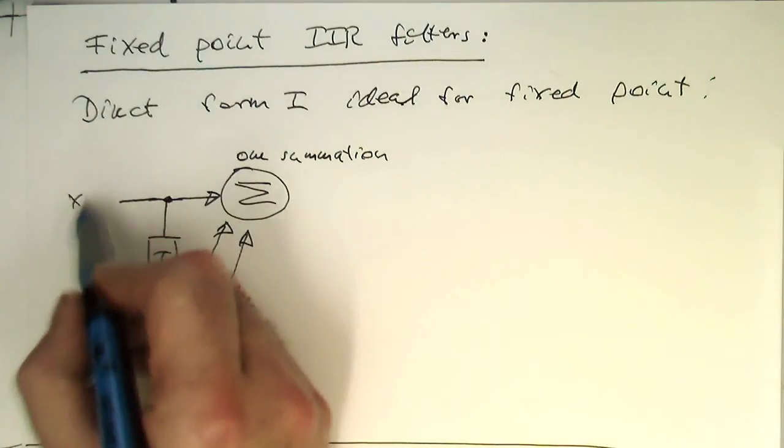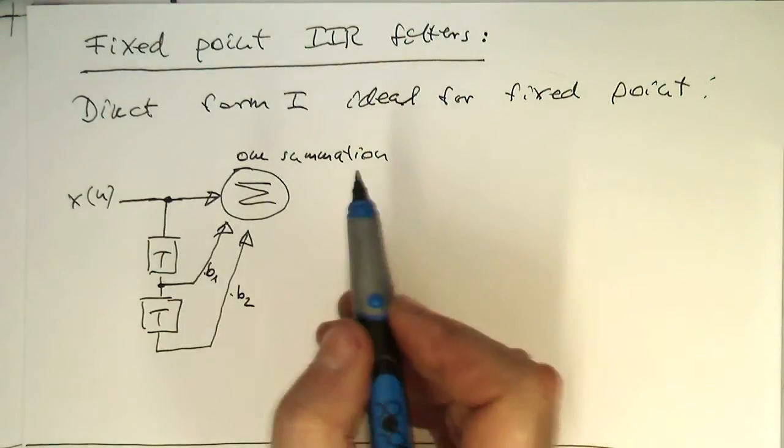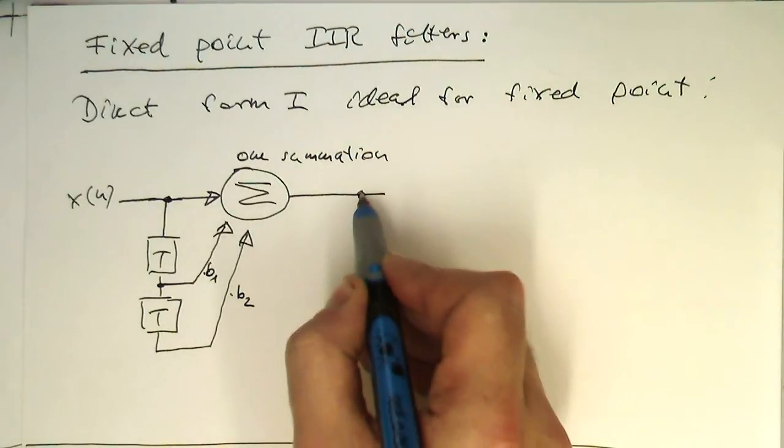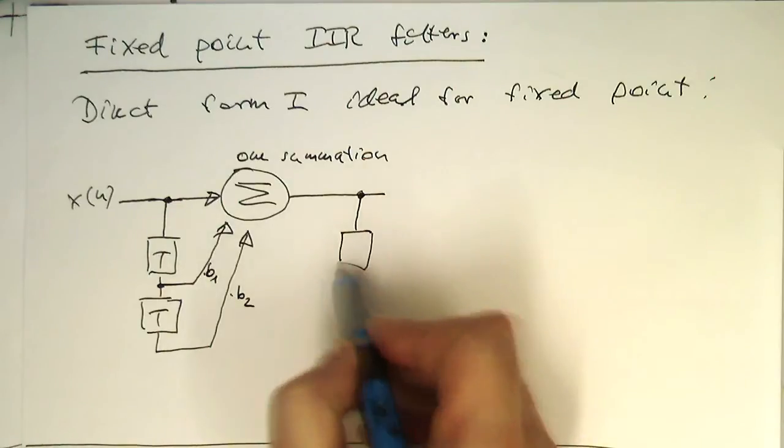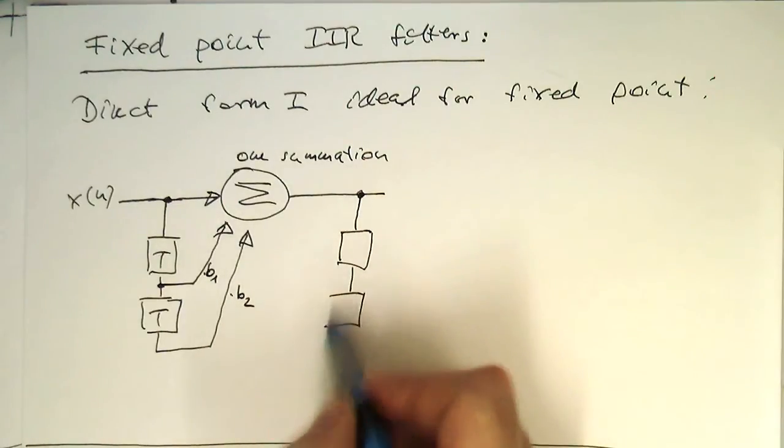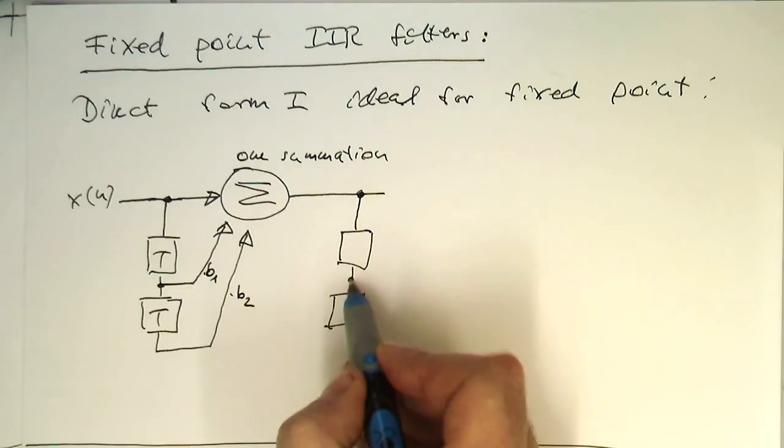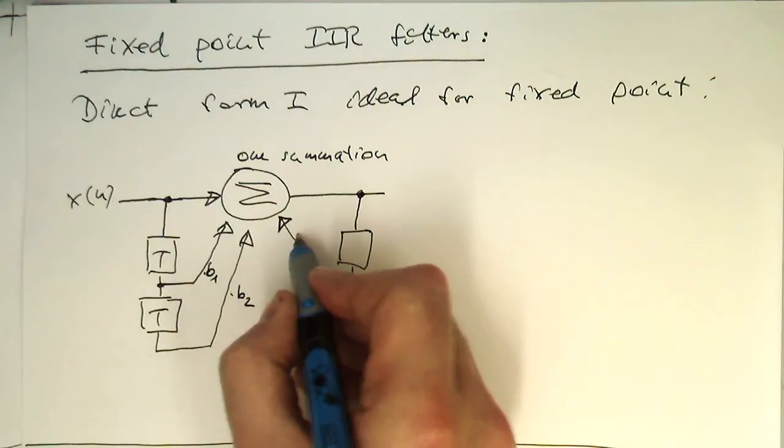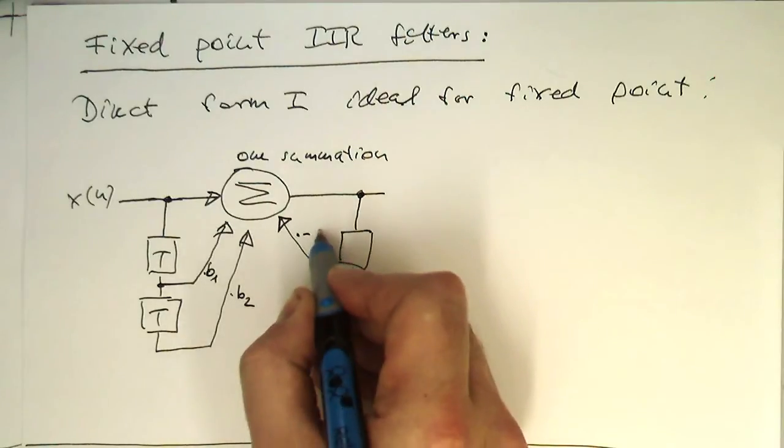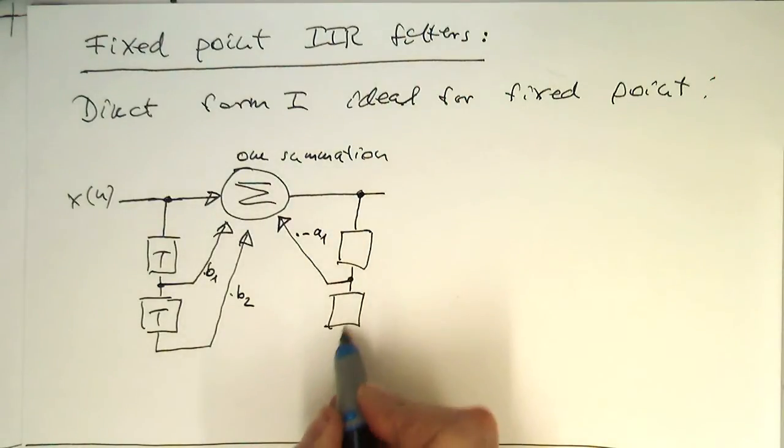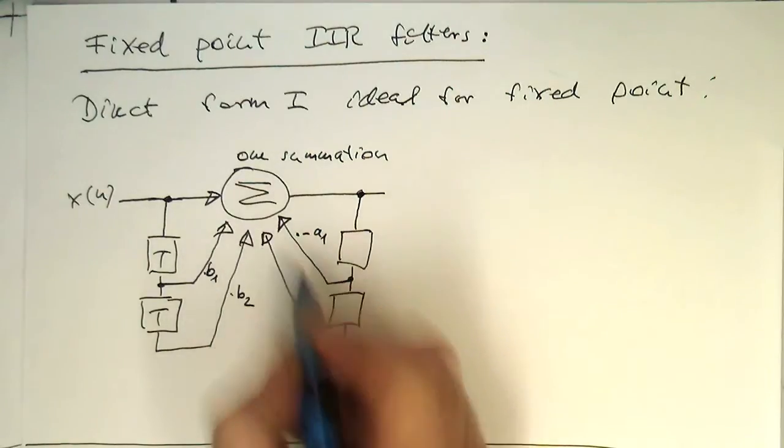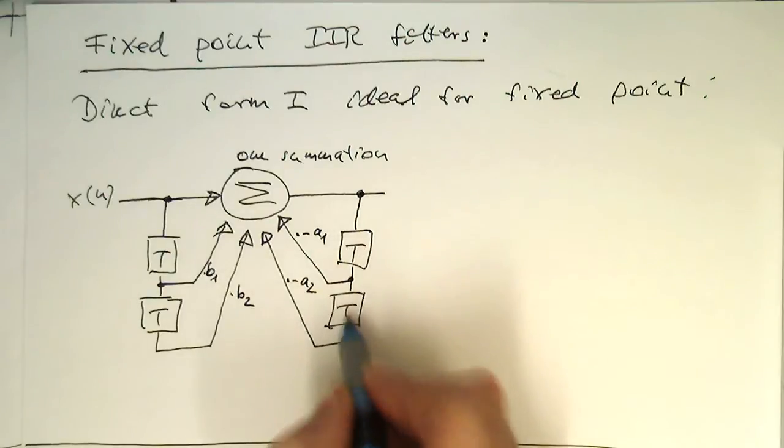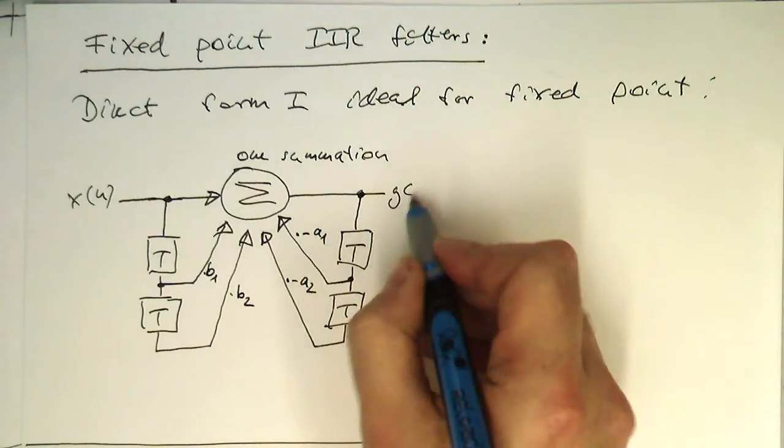So that's our FIR part here with coefficient b1 multiplied by b1 and multiplied by b2. And this is our input x. And so now at the output, we have again a delay line. And this is now for our recursive part, the IIR part. So this one feeds here into, is multiplied by minus a1, and this one is multiplied by minus a2.